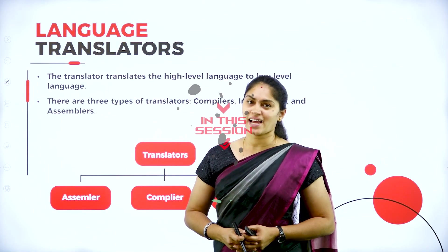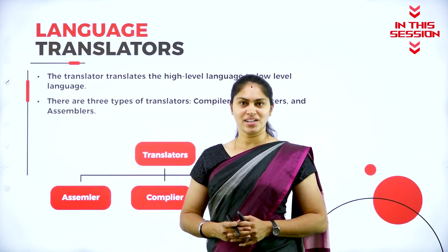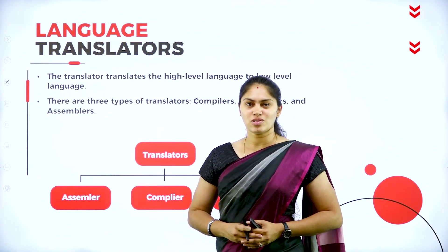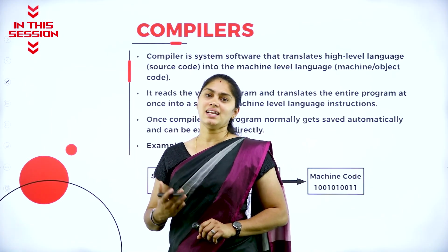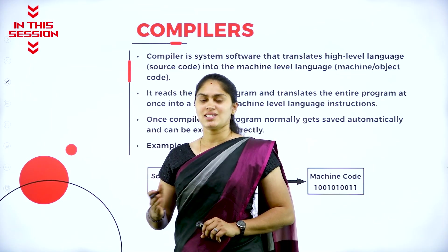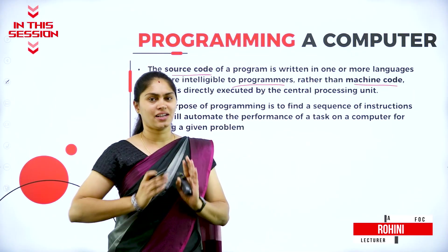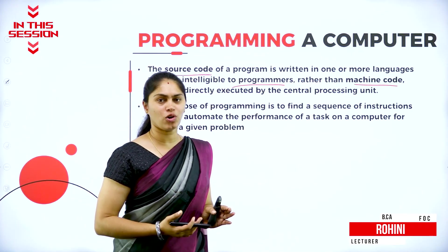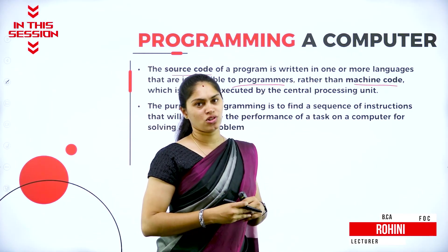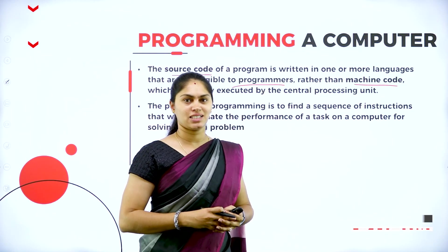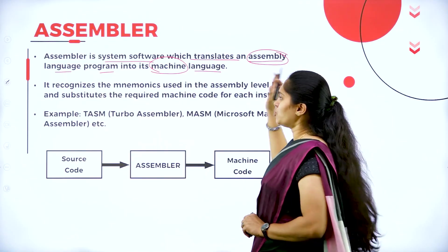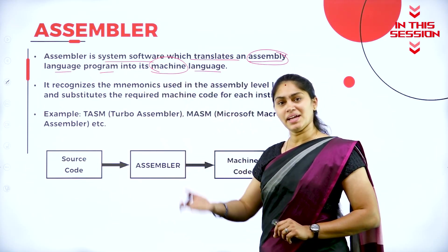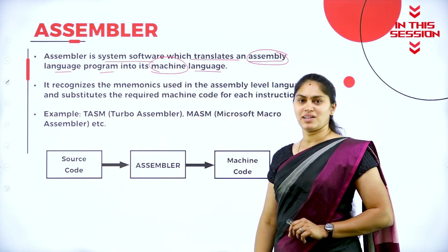Computers can understand only binary language, or machine level language, that deals with zeros and ones. Both compiler and interpreter convert high level programming language into its equivalent machine language. Code needs to be translated into machine code or object code, then only the execution of the program takes place. Mnemonics or symbolic representations are converted into equivalent machine language with the help of an assembler.